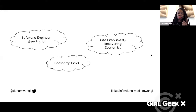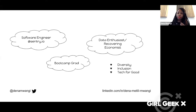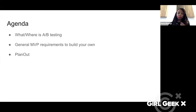So — software engineer, boot camp grad, studied economics. I really like thinking about the world in terms of data, which is how I ended up in the role that I'm in now. I also really like thinking about diversity and inclusion and how to do tech for good. Our agenda for today: we're going to go through what and where A/B testing is, talk through the general MVP requirements if you want to build your own, and then talk about PlanOut, which is an open source framework you can use to help you out.